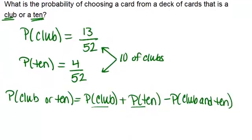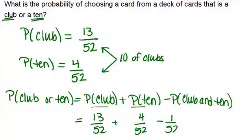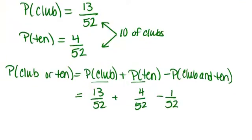Once we do that, we'll have our answer. The probability of a club is 13 out of 52, the probability of a 10 is 4 out of 52, and the probability of a club and a 10 is just 1 out of 52, because there's only one card in the deck that is both a club and a 10. So combining these gives us 16 out of 52, or 4 out of 13.